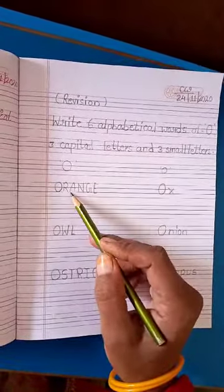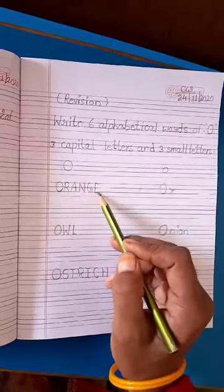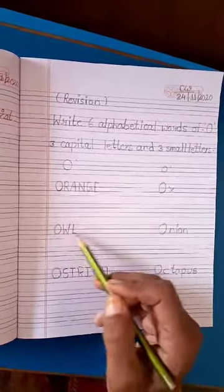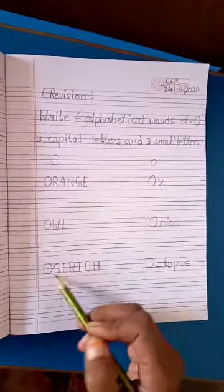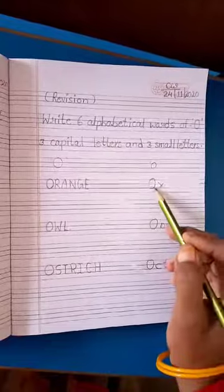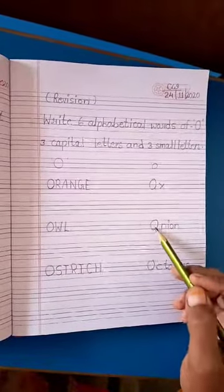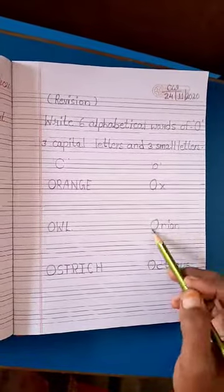Write six alphabetical words of O. Three capital letters and three small letters. ORANGE. O, R, A, N, G, E. Orange. OWL. O, W, L. Owl. OSTRICH. O, S, T, R, I, C, H. Ostrich. OX. O, X. Ox. ONION. O, N, I, O, N. Onion.